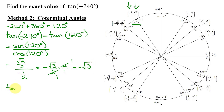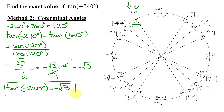So the tangent of negative 240 degrees is equal to negative the square root of 3. Both methods give the same answer — it's up to you which method you pick.